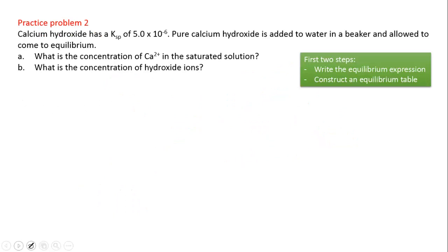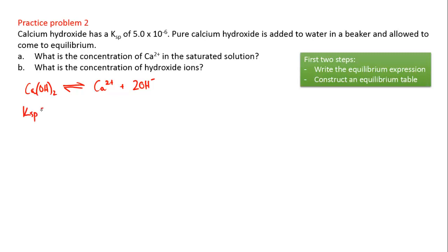Calcium hydroxide has a K_sp of 5 times 10 to the minus 6. We're going to add some pure calcium hydroxide to water, allow it to reach equilibrium, and work out the concentration of calcium ions in the saturated solution. Our two steps are to write the equilibrium expression and construct an equilibrium table. Calcium hydroxide, formula Ca(OH)₂, dissolves into one calcium ion and two hydroxide ions, so the K_sp expression is concentration of Ca²⁺ times concentration of OH⁻ squared.